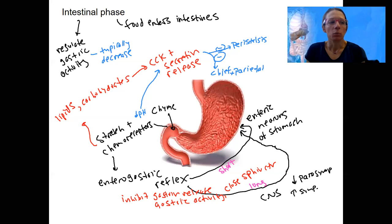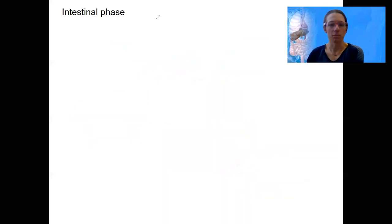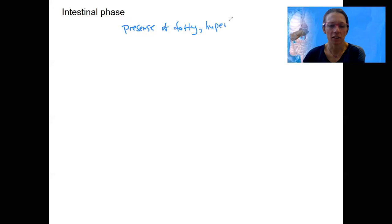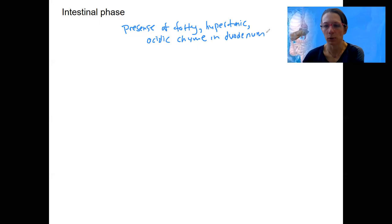Let's review with a nice summary diagram. During the intestinal phase, the presence of fatty, hypertonic — meaning high osmolarity, really salty — and acidic chyme in the duodenum will trigger both an endocrine hormone response and a neural response. Let's do the neural response first.